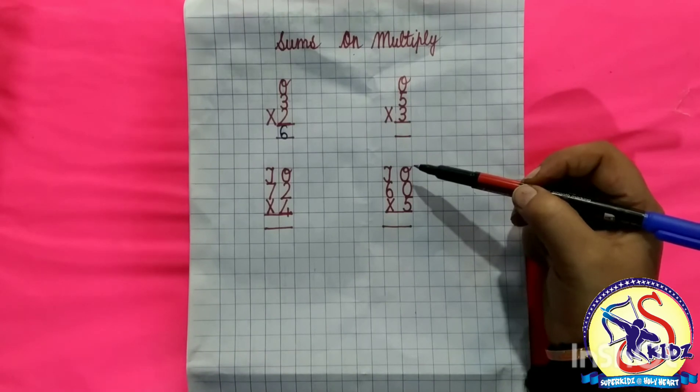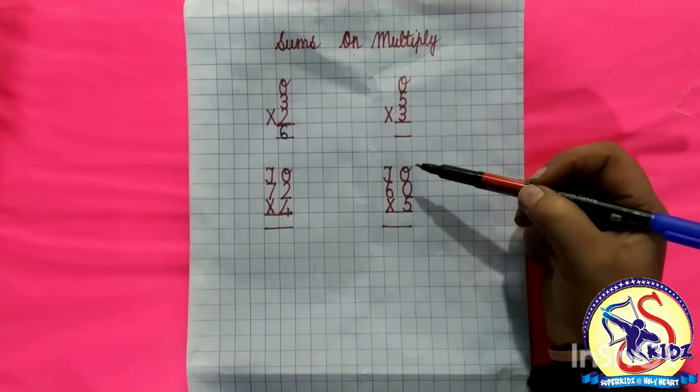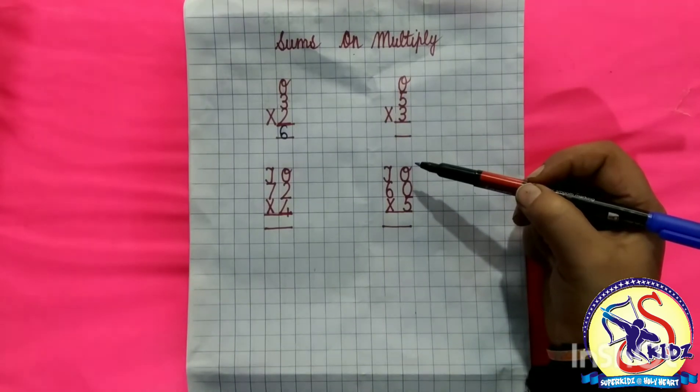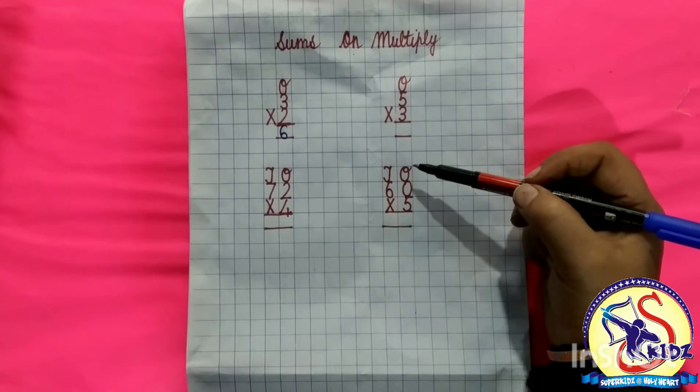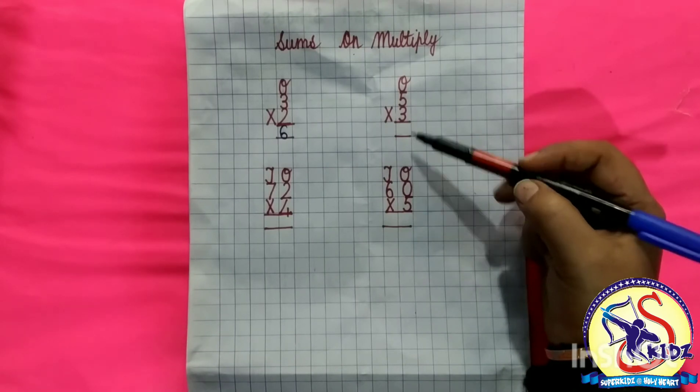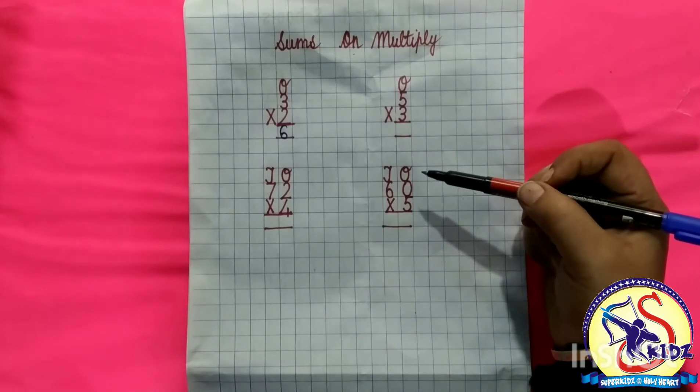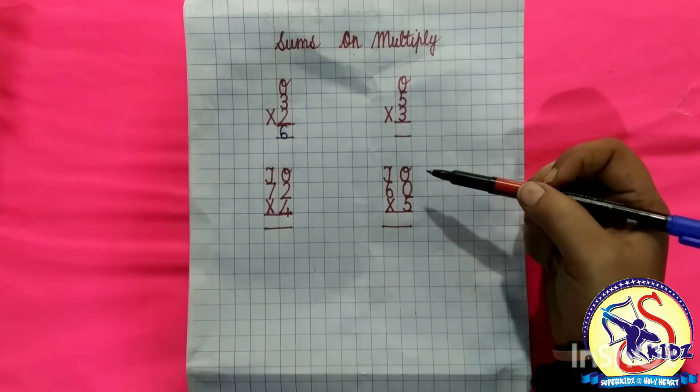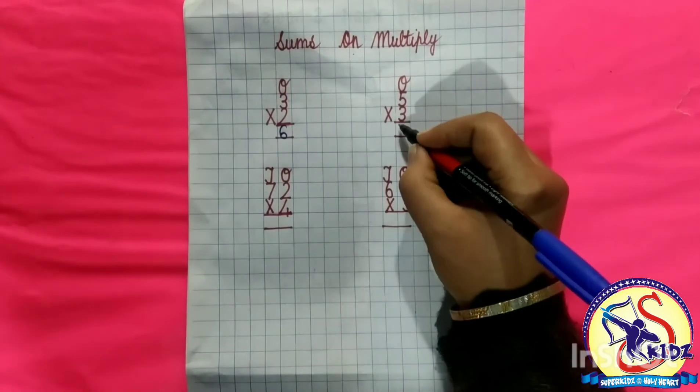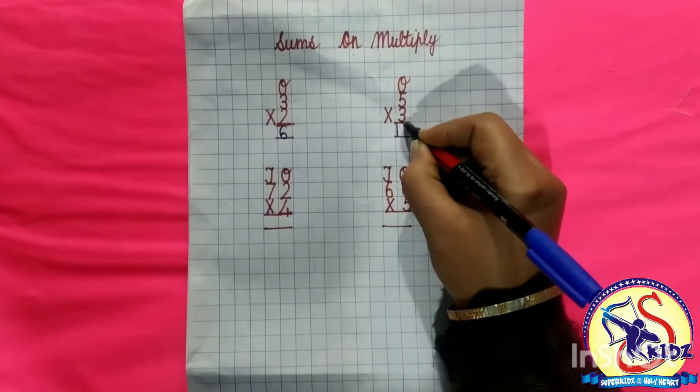Kids, for multiplication you should revise tables. You should know quick multiplication. Tables should be on your tips. So we are going to do quick multiplication here. 3 into 5 equals to 15. So answer is 15.